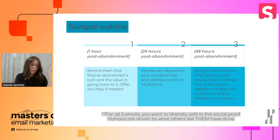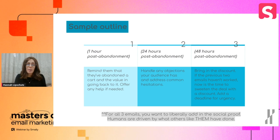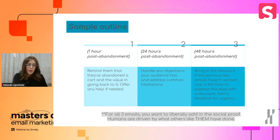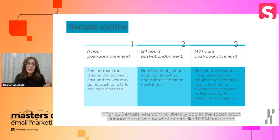Email two, 24 hours post-abandonment: this is a hard-hitting email where you handle any objections your audience has. You need to know their hesitations through research and address them. If something keeps coming up — like it's a very expensive product, or hard to clean, or they're not sure it's the right fit — you need to walk them through why they should buy even so. Coach them through the 'I can't decide' moment, because that moment is based on something specific.